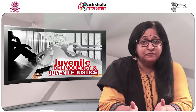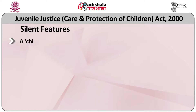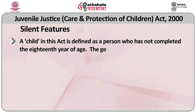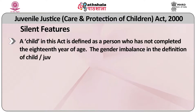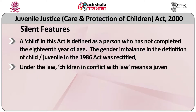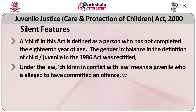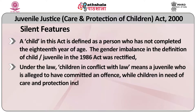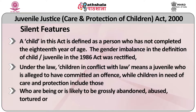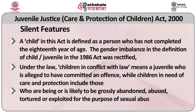Let me highlight some of the salient features of the 2000 Act. A child in this Act is defined as a person who has not completed the 18th year of age. The gender imbalance in the definition of the child or juvenile under the 1986 Act was rectified in the 2000 Act. Secondly, under the law, children in conflict with the law means a child who is alleged to have committed an offence, while children in need of care and protection includes those who are being or likely to be grossly abandoned, abused, tortured or exploited for the purpose of sexual abuse or any other illegal act.